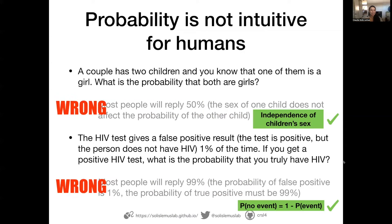These two wrong answers are built on true and real probability concepts — there is the independence of children's sex, and the probability of one event is one minus the probability of the complement event. Those are real concepts that are actually true. But the way we are framing the probability and the interpretations we're getting — those are wrong.